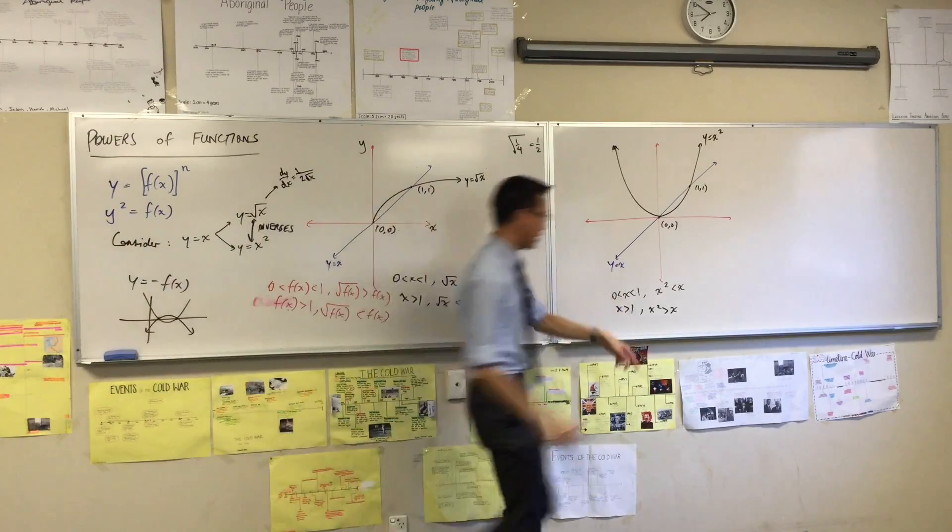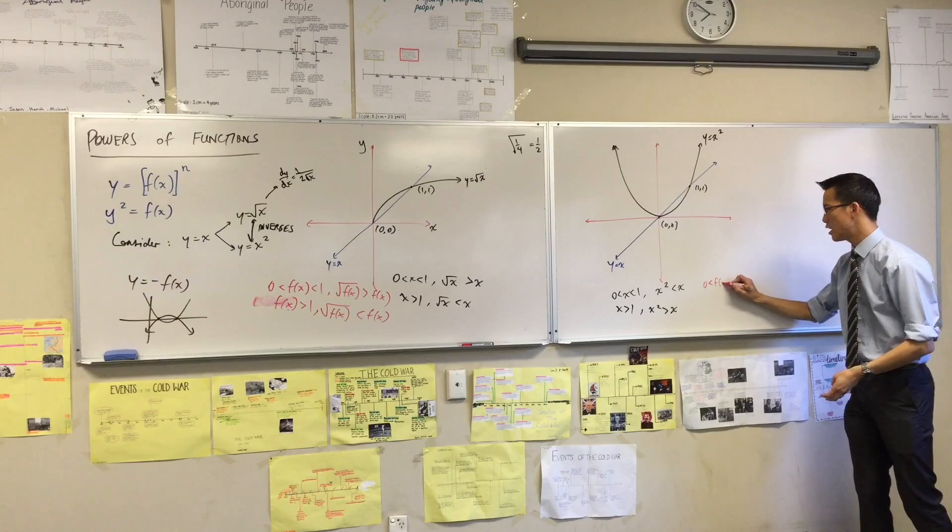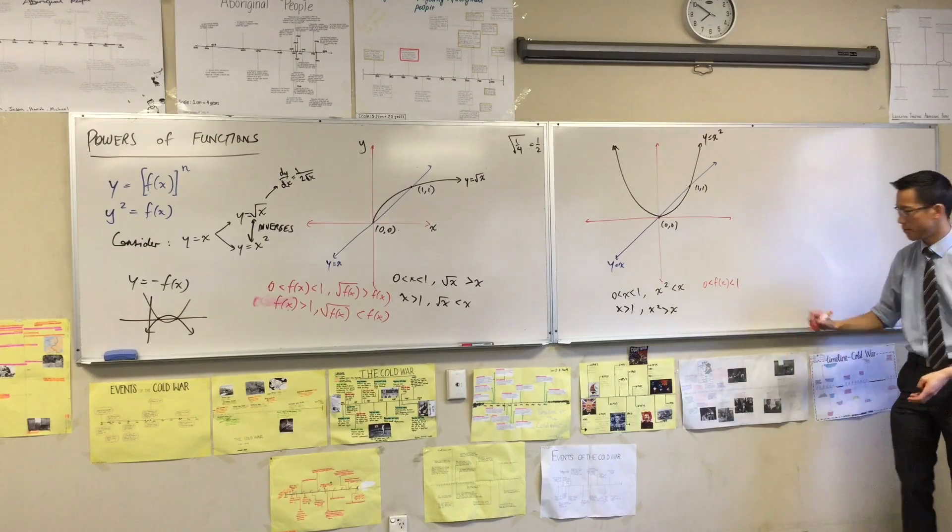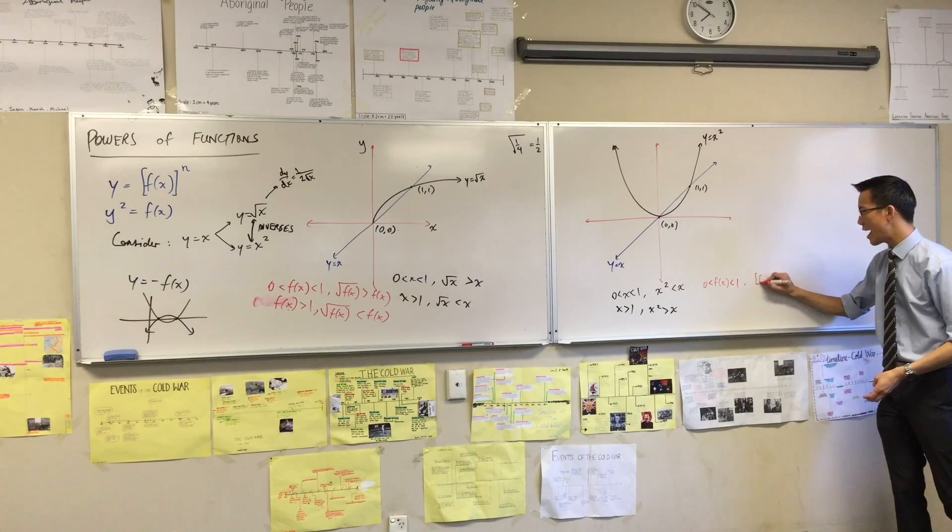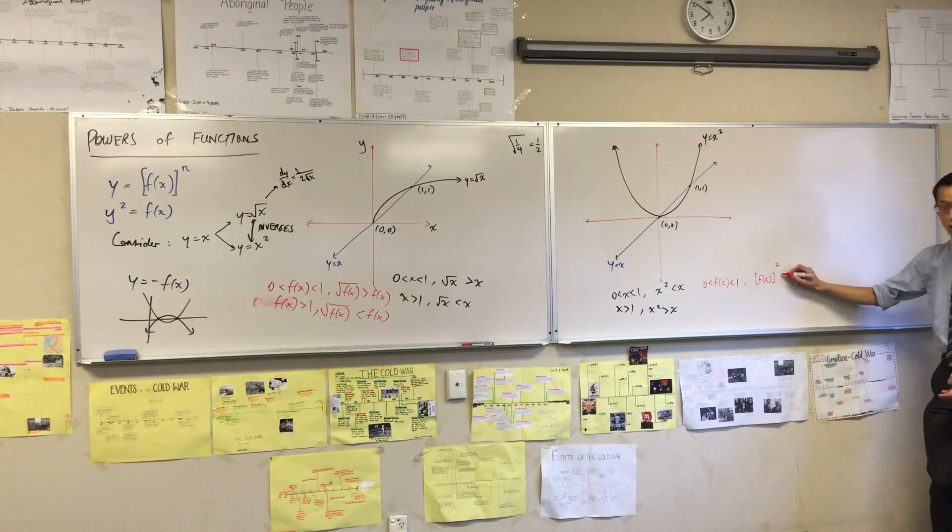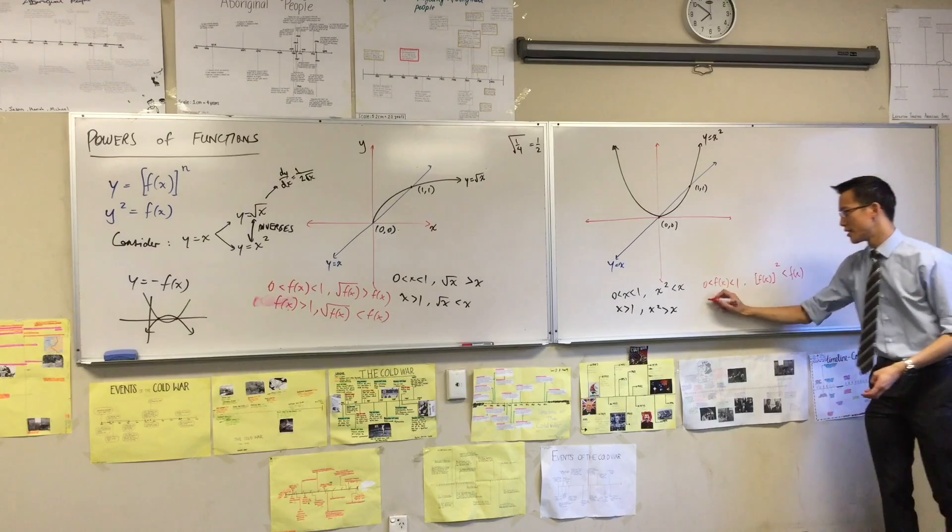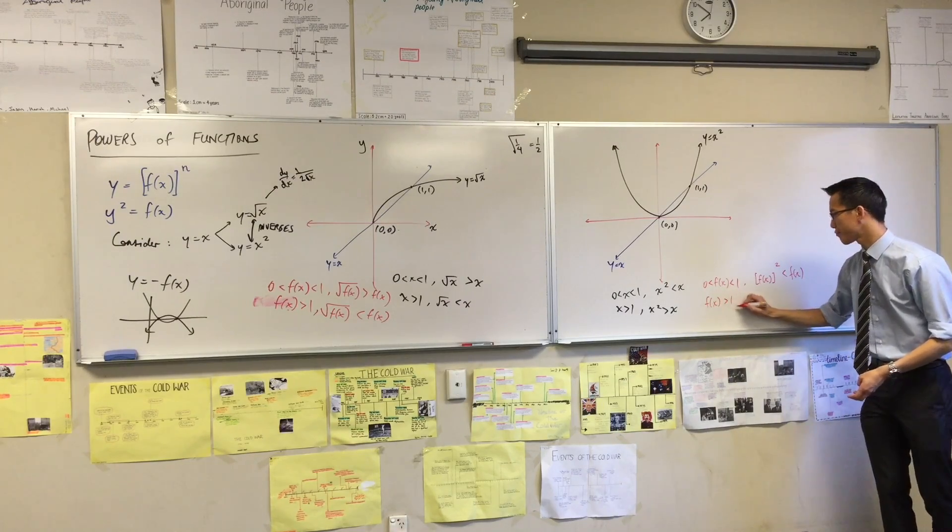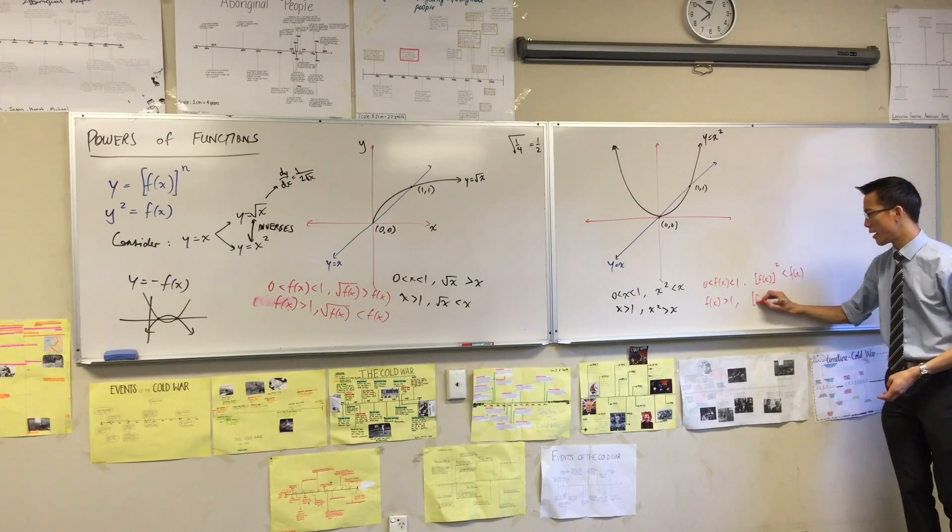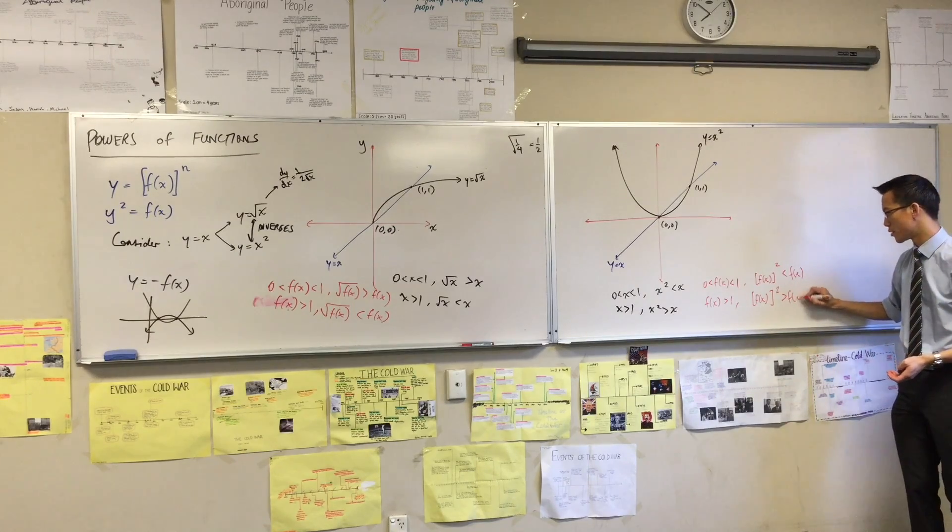And in the same way, over here, I can say if your function is between 0 and 1, then if you square that function, it's going to be less. Right? Does that make sense? Whereas if your function is bigger than 1, if you square that function, well, of course, you expect things to get bigger when you square them if they're big numbers.